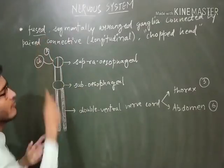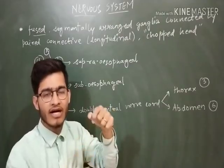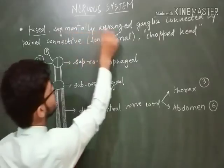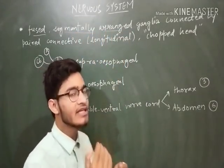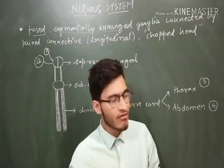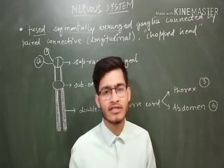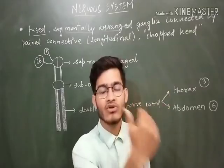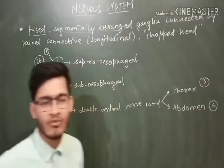After that, how does the neural system look like? They are formed of fused - fused means they are attached, connected together. So fused, segmentally arranged. Segmentally arranged simply means that they are arranged in the form of segments. Some of the portion will be lying in the head, some of the portions will be lying on the thorax, and some of the portions will be lying on abdomen. So there are segments: head, thorax, abdomen. So in different regions of body, the ganglions can be present.